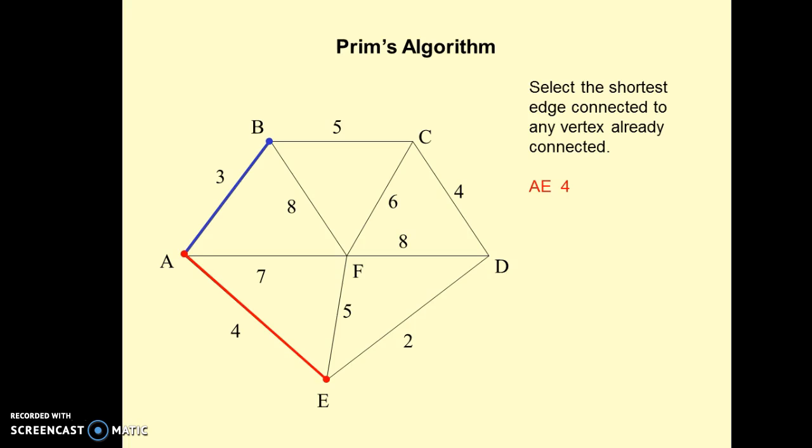Now the next one will be AE, because A and B will be the active nodes. Among the edges connected to A and B, we find that AE is the minimum one. AE is 4, so we will select the next node as E.